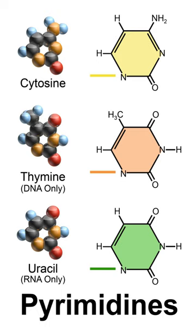Reduction in resonance stabilization of pyrimidines may lead to addition and ring cleavage reactions rather than substitutions. One such manifestation is observed in the Dimroth rearrangement. Pyrimidine is also found in meteorites, but scientists still do not know its origin. Pyrimidine also photolytically decomposes into uracil under ultraviolet light.